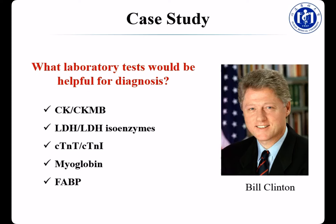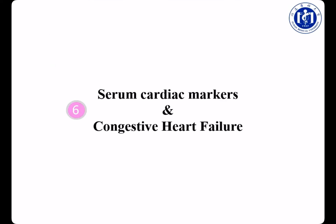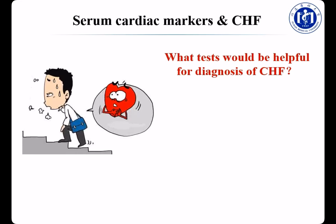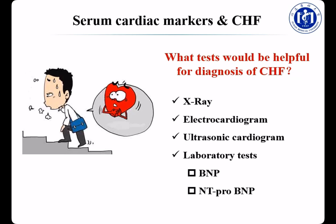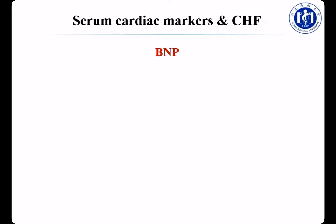Now let's return to the case of Bill Clinton. What laboratory tests would be helpful for diagnosis? CK, CKMB, LDH, LDH isoenzymes, troponin T, troponin I, myoglobin, and FABP are all helpful. If he had chest pain for more than two days, we should choose markers for late diagnosis: LDH, LDH isoenzymes, troponin T, and troponin I. If he had chest pain just half an hour ago, we should choose markers for early diagnosis: myoglobin and FABP.